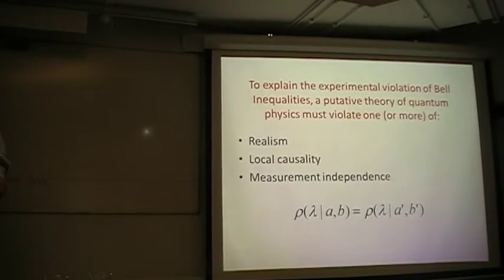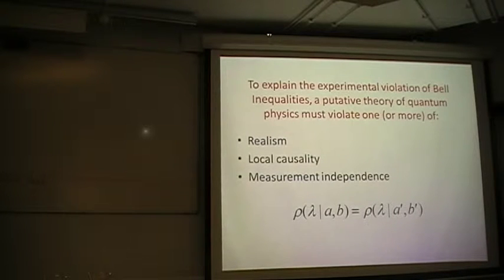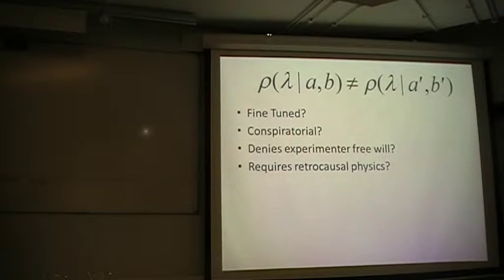To explain the experimental violation of Bell inequalities, as we all know, we have to violate either realism, local causality, or this notion of measurement independence, that probability distributions over some putative hidden variable are independent of the measurement settings A and B. If one wishes a model that is realistic and locally causal, one is forced to consider violations of that third condition, measurement independence.